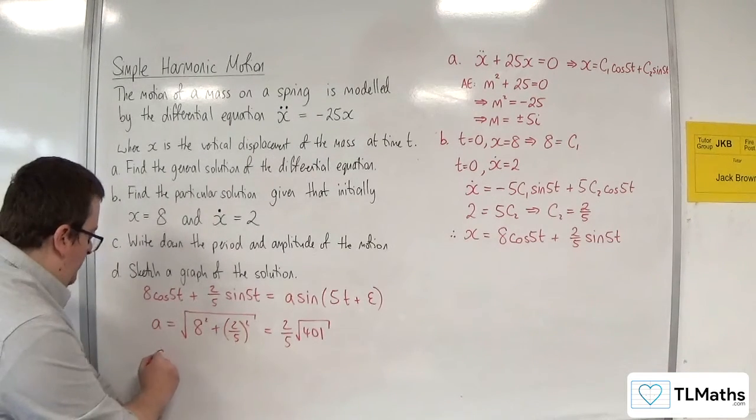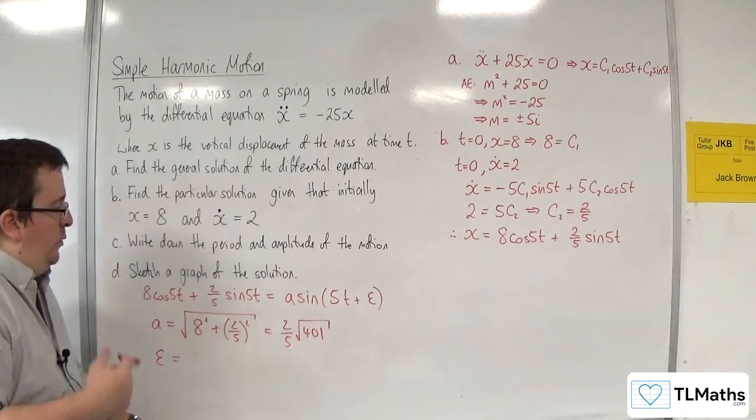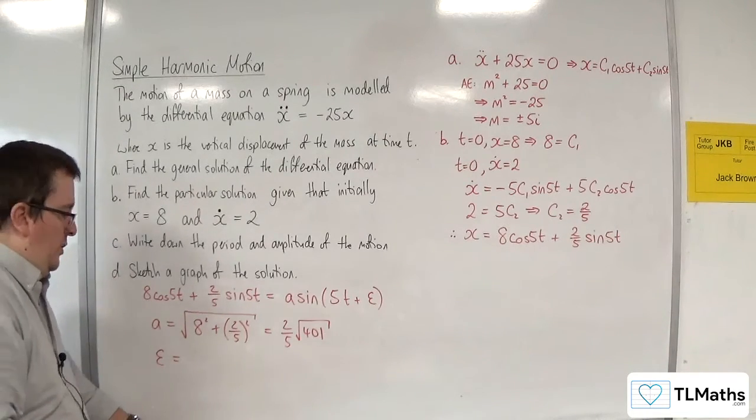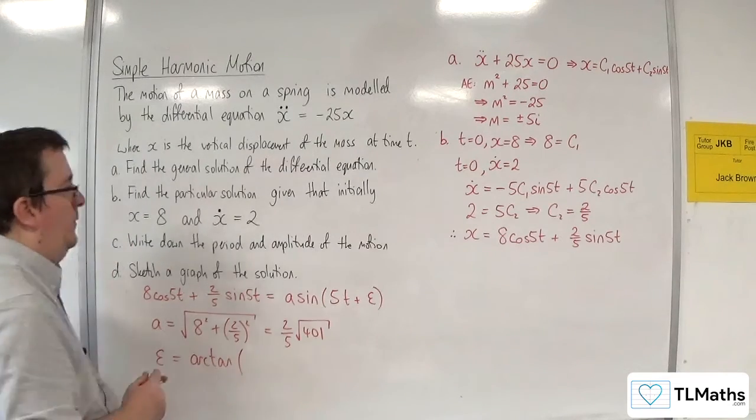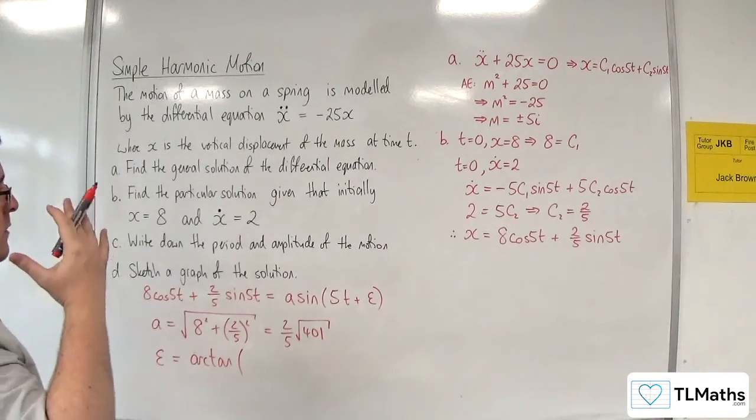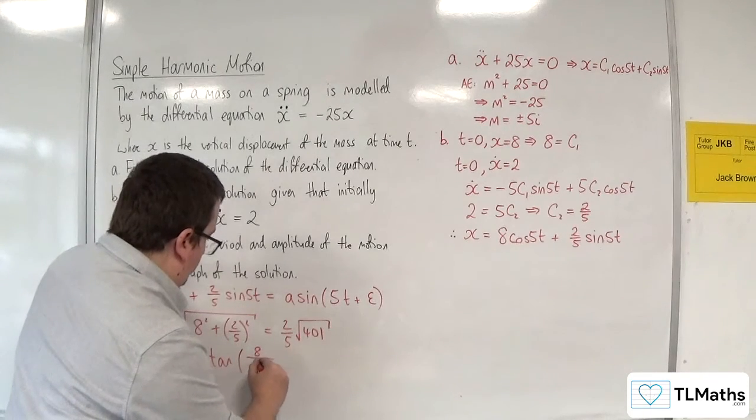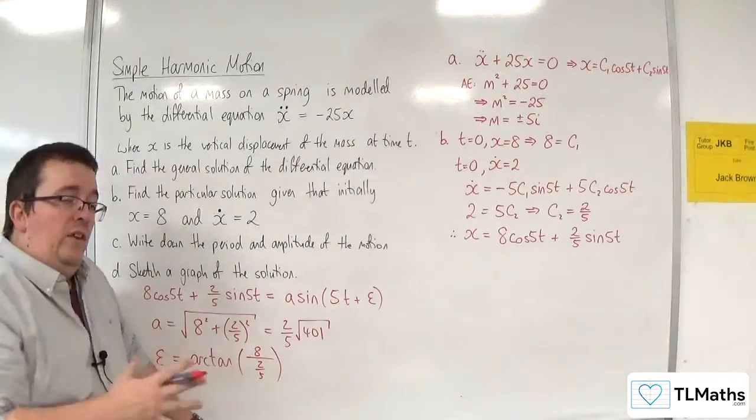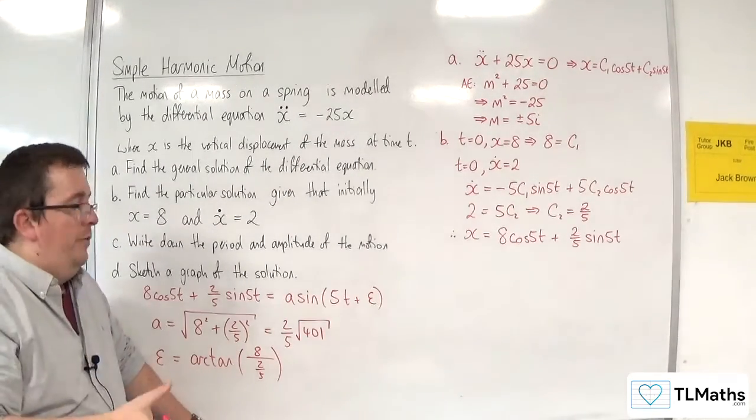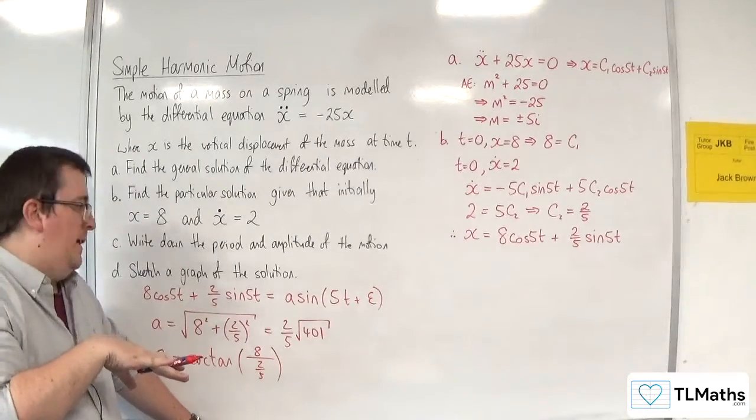Then ε, well, tan of ε is equal to the c₁ over the c₂. So arc tan of the 8 over the 2/5. Now as I said, if you're a little bit unsure about getting this the right way round, then use the compound angle formula and do it step by step.